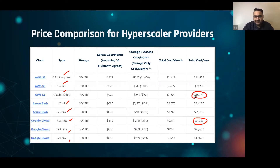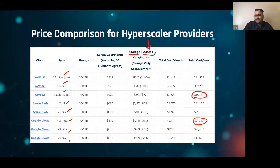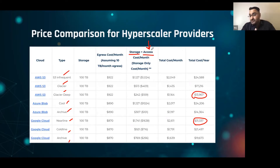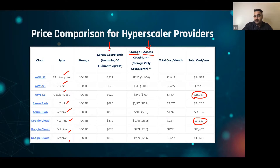This is where I'll cover the whole egress versus access distinction. Looking at this column — this is the cost for the storage and the cost to access the data. Storage is obviously the cost you pay to store your data. Access is the price you have to pay to touch that data, and you're charged to access it whether you take that data out of the data center or leave it in. Egress is specifically when you actually pull that data out of the data center.